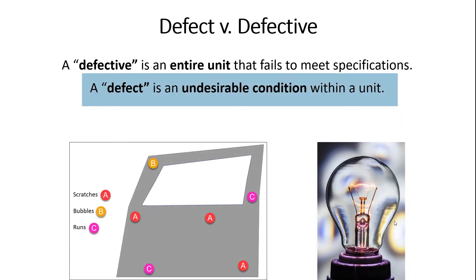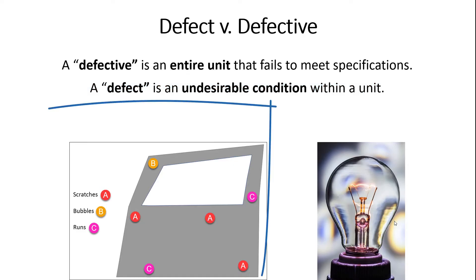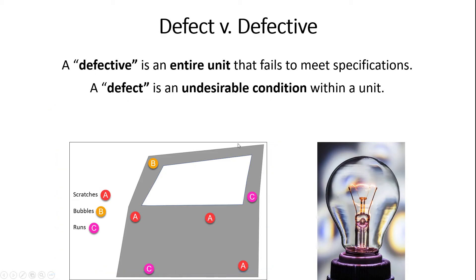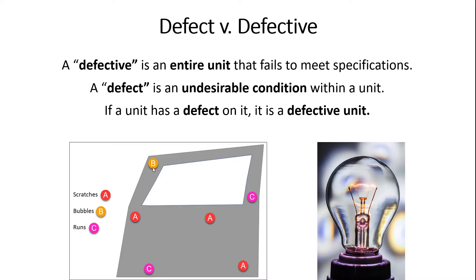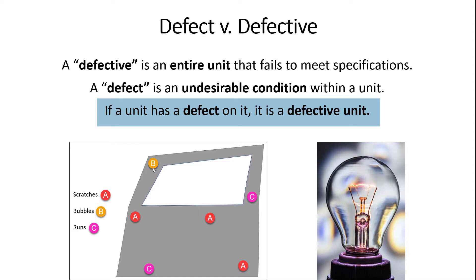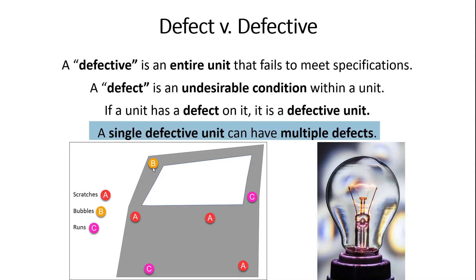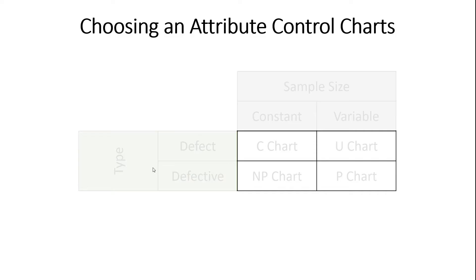A defect is an undesirable condition within a unit. For example, let's say we're building cars and we have a car door. We inspect the car door and find six different defects: three scratches, two runs, and one bubble. On this single unit we have six different defects. This entire car door is considered a defective unit. If a unit has a defect on it, it is a defective unit, and a single defective unit can have multiple defects. This distinction changes the way we select our control charts.